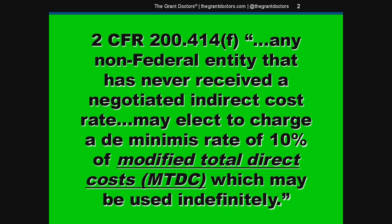We'll go through that math in just a little bit. If you've had a negotiated rate with the federal government in the past, you're not eligible to use the de minimis rate. You'll need to negotiate a new rate with your cognizant agency for indirect.